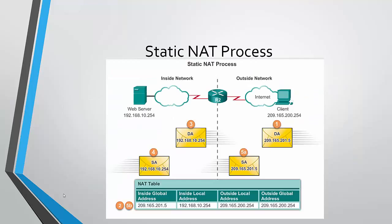This is a summary of how the NAT process works. The client sends a packet to the web server using a public address. That address reaches R2. R2 checks its NAT table and decides that the public address is bound to that inside local address, which is the one for the web server. It translates it, so in step 3 the packet now has a private address instead of a public one. It reaches the web server. The web server sends another packet with its own private address, which reaches the router again. The router checks which outside local address it needs and changes from a private address to a public address, which is then sent directly to the client.